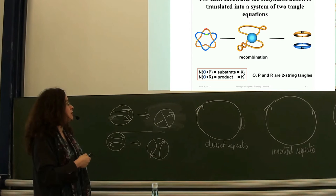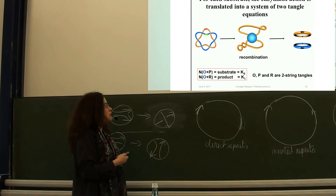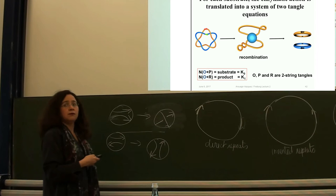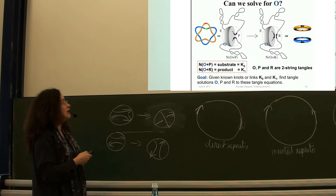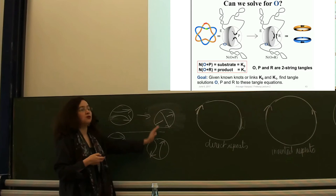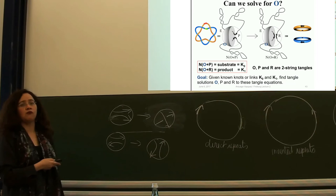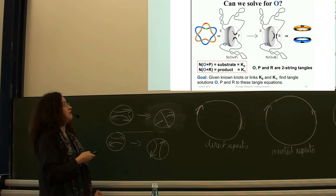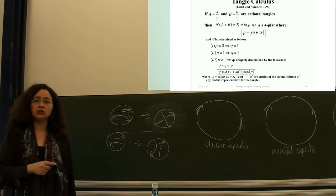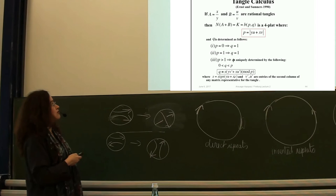Each step in the two-step reaction will be modeled by a tangle equation: numerator of O+P is K0, numerator of O+R is K1. You usually know K0, and you'll have some information about K1. The big question is: can we solve for O? If we assume O is a rational tangle or the sum of two rational tangles, then we can solve for O using the tangle calculus that Ernst and Sumners developed. This first appeared in their 1990 paper in the Mathematical Proceedings of the Cambridge Philosophical Society, with further papers in 1996, 1997, and 1999 extending the techniques.